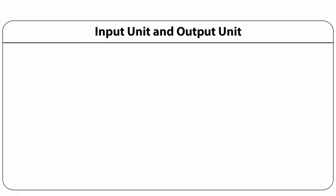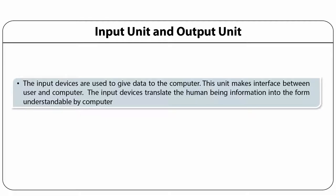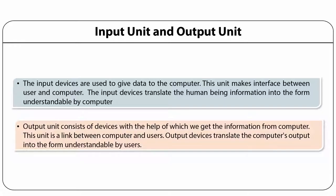Coming to the various parts — input unit and output unit. Input devices or input units are used to give data to the computer. This unit makes an interface between the user and the computer, and translates the human being's information into a form understandable by the computer. The output unit is a device with the help of which we get the information from the computer. It is a link between the computer and the user, and translates the computer's output into a form understandable by the user.